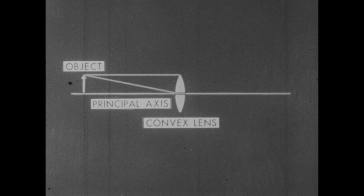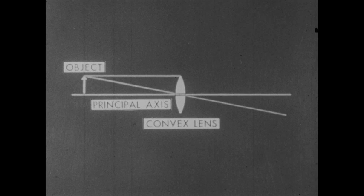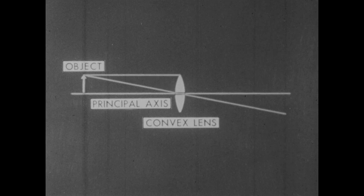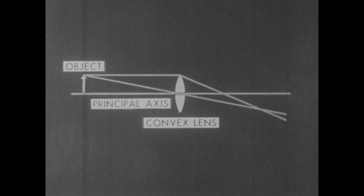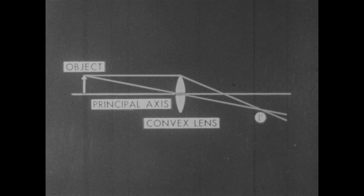This ray diagram illustrates two light rays coming from a point on the object. One ray passes through the principal axis and is not appreciably refracted. The other ray, passing through the edge of the lens, is refracted most. It intersects the first ray at a point called I prime, where the image is located.